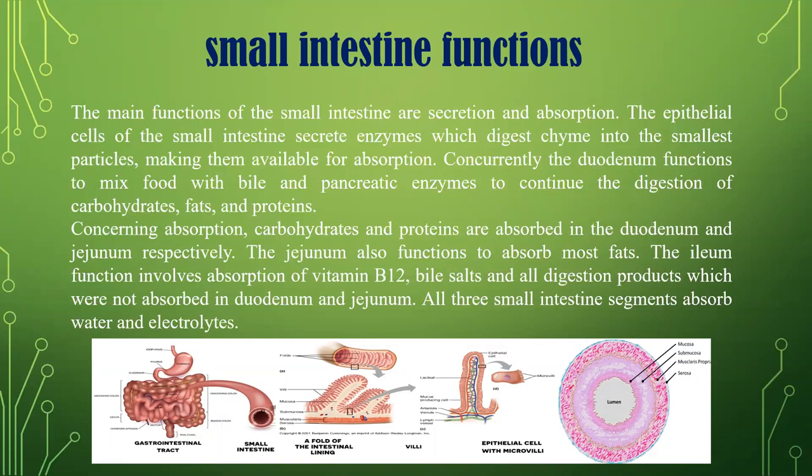The duodenum functions to mix food with bile and pancreatic enzymes to continue the digestion of carbohydrates, fats, and proteins. Carbohydrates and proteins are absorbed in the duodenum and jejunum respectively. The jejunum also functions to absorb most fats. The ileum involves absorption of vitamin B12, bile salts, and all digestion products not absorbed in the duodenum and jejunum. All three small intestine segments absorb water and electrolytes.